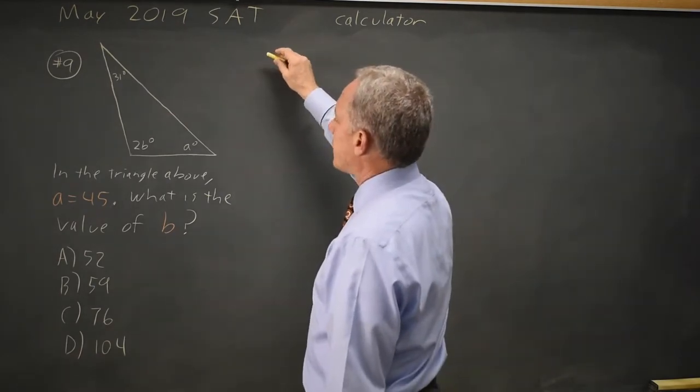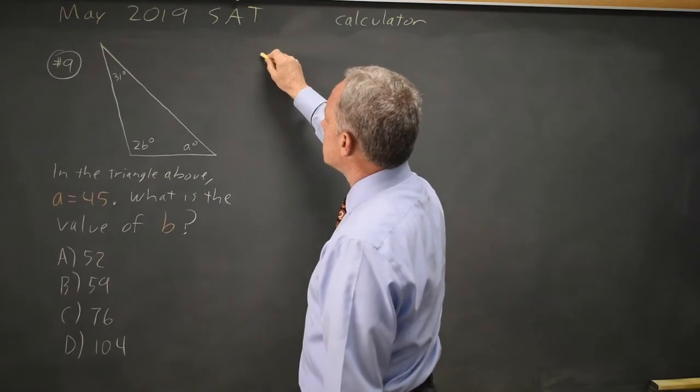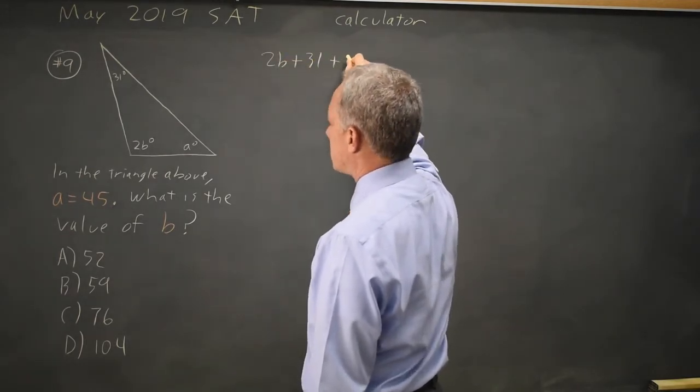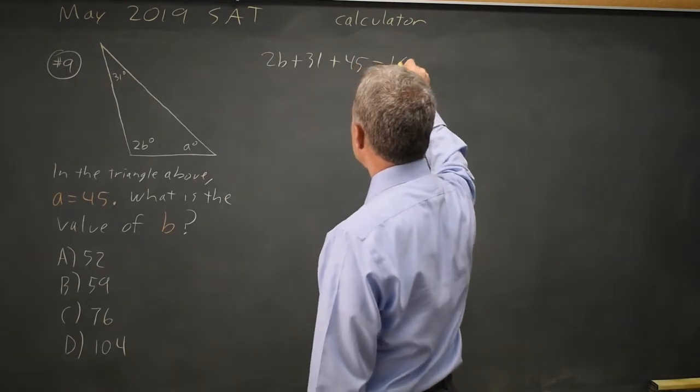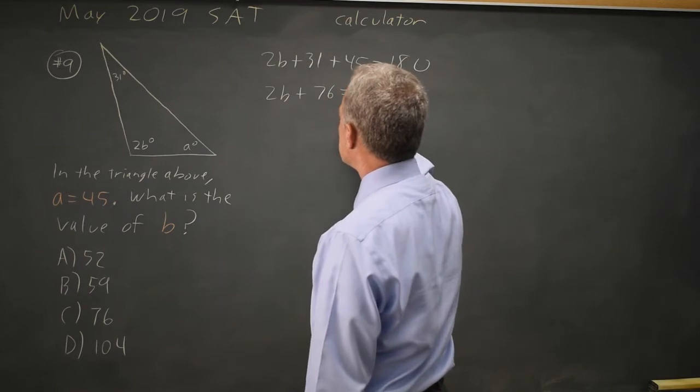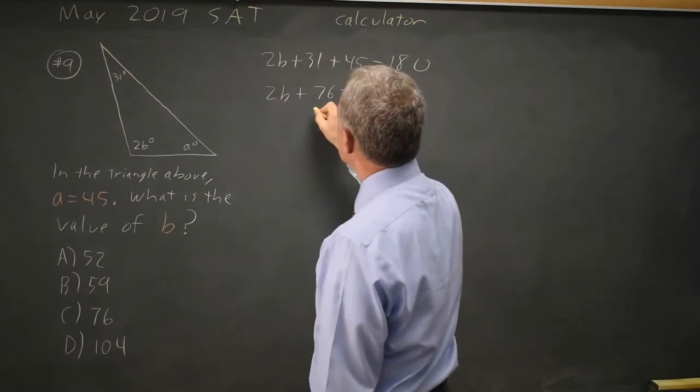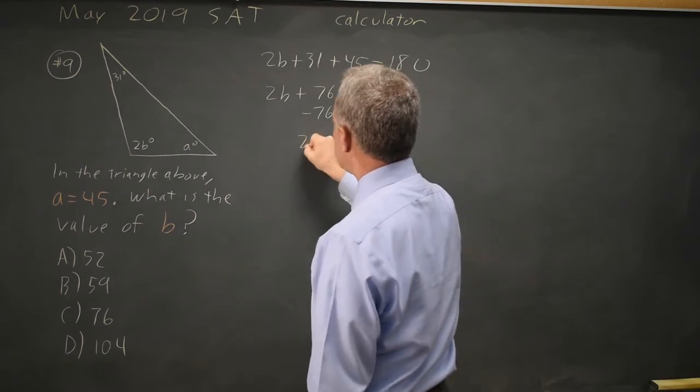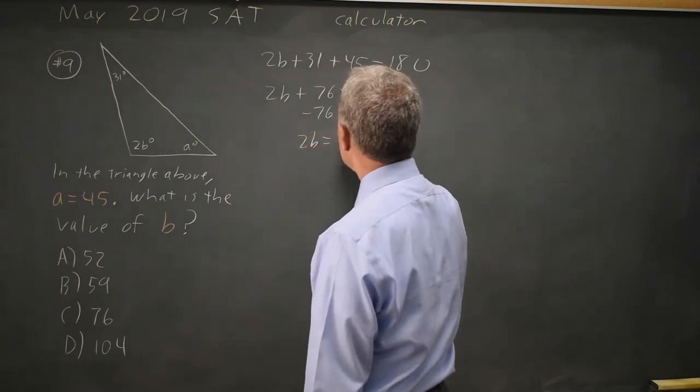I know the angles of a triangle add up to 180 degrees. 2B plus 31 plus A, which is 45, equals 180. So 2B plus 76 equals 180. Subtract 76 from both sides, and I get 2B equals 104.